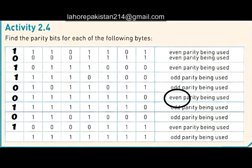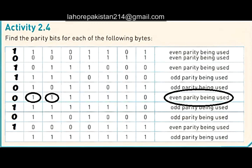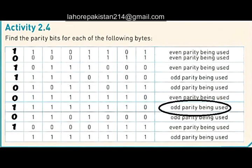Now let's look at the next part, in which we need to make even parity. The number of ones is one, two, three, four, five, six — six is even. So we do not need to add a one; we have added a zero in the beginning.